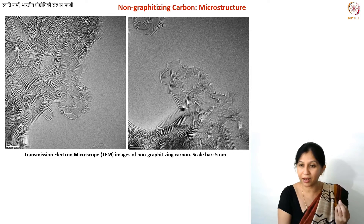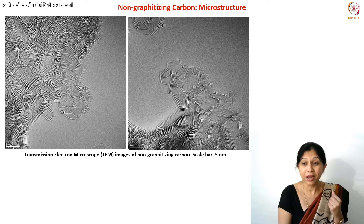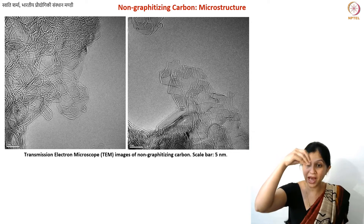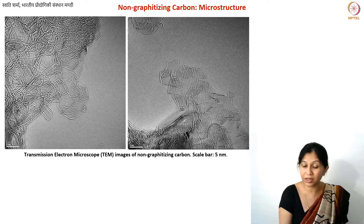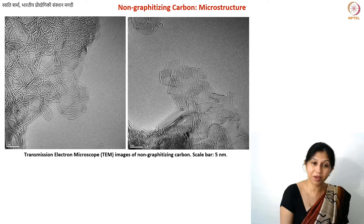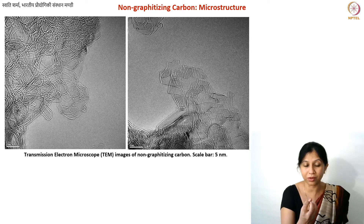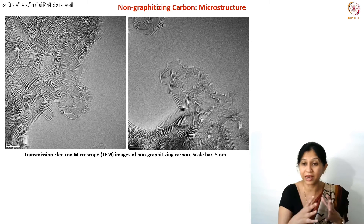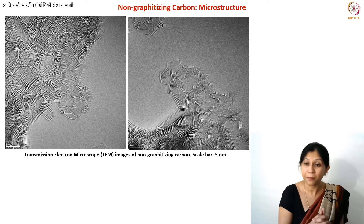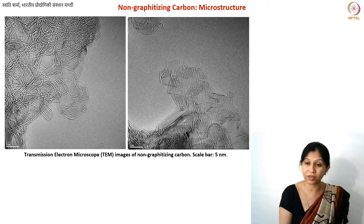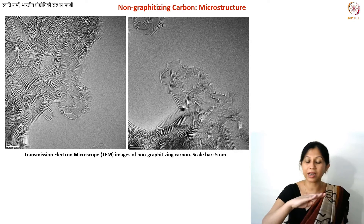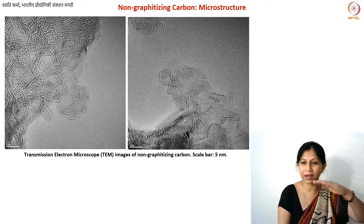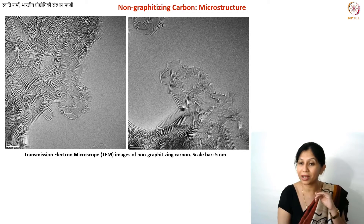When the electron beam passes through your sample, it can also cause some damage, especially when the sample is extremely thin. It needs to be thin so the beam can pass through completely; otherwise the electrons will diffract too much and you may get very dark images. In materials like graphite with nicely organized crystal planes, you will see one dark line, then one bright, alternating — because of the organized crystal planes.